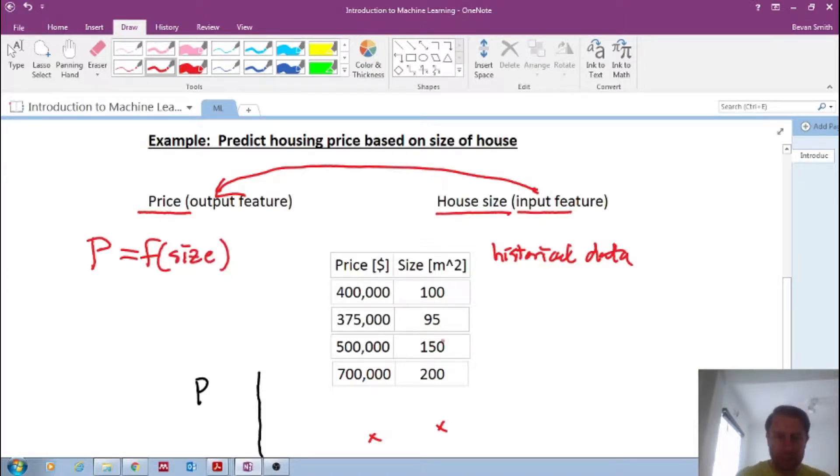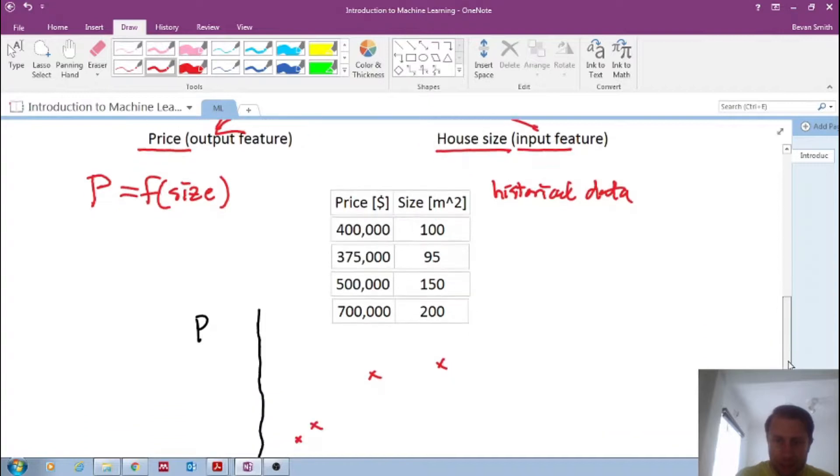So we've got this data, we've got price here in dollars. $400,000, $375,000, 500, et cetera. And for each of these houses, we've got their size in square meters, because I'm from South Africa, 95 square meters, 150, 200. This is a very simple, basic example.